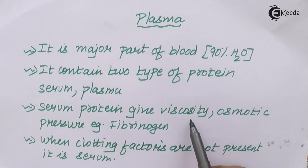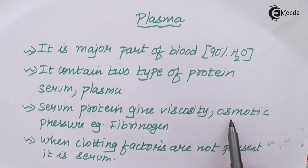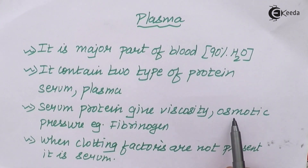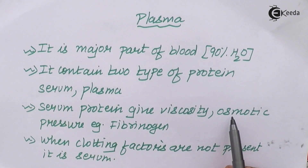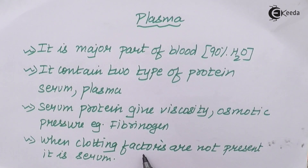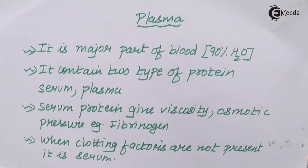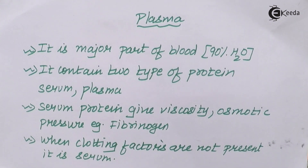Serum proteins maintain osmotic balance, which is very crucial whenever substances are flowing between or around cells. Whenever clotting factors are not present, the fluid is termed serum. So whenever you add or remove clotting factors, there is a differentiation between plasma and serum.